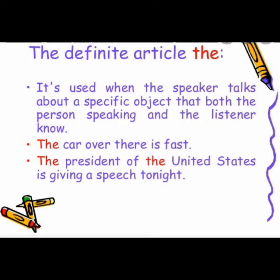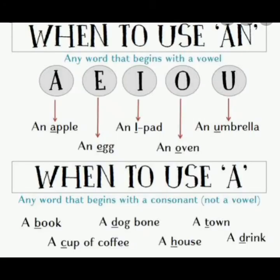When to use 'an': any word that begins with a vowel sound — a, e, i, o, u — for example: an apple, an egg, an iPad, an hour, an umbrella. When to use 'a': any word that begins with a consonant sound — for example: a book, a dog bone, a town, a cup of coffee, a house, a drink.